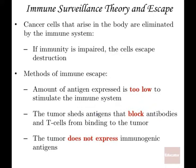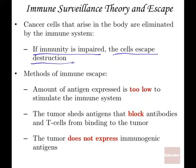The immune surveillance theory asks: is the immune system capable of identifying cancer cells, and can it actually eradicate a cancer? If the immune system is impaired — for example, in individuals who are immune suppressed due to medication — those individuals are also at high risk for development of certain cancers. If the immune system is impaired, we can expect to see more cancers and cancer cells will escape detection.